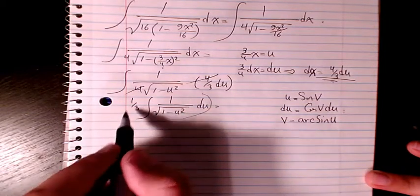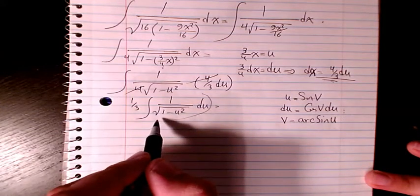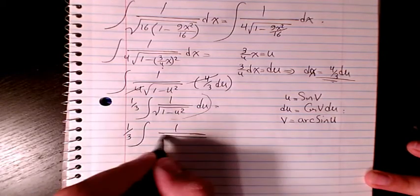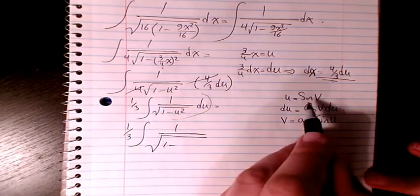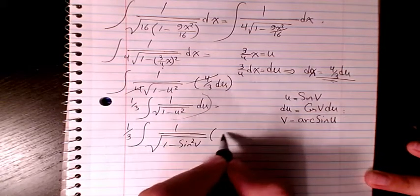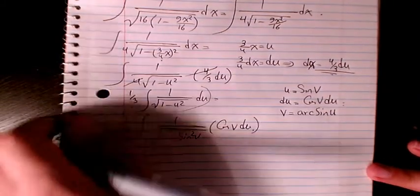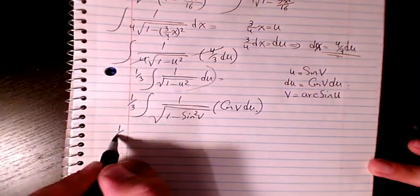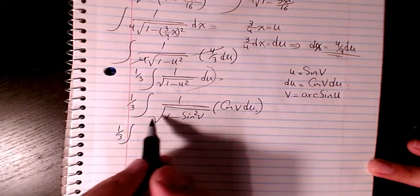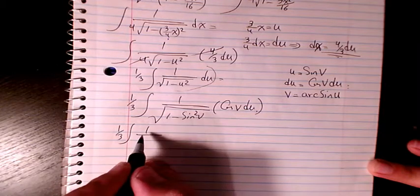you have 1 over 3, 1 over square root of 1 minus u squared which is going to be sine squared v, and du is cosine v dv. Then it will be 1 over 3, 1 minus sine squared v is going to be cosine squared v, and then cancel out with the square root so it's going to